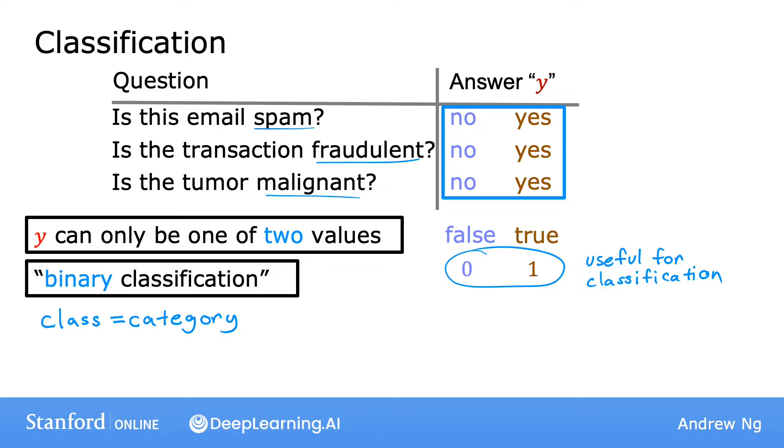One of the terminologies commonly used is to call the false or 0 class the negative class and the true or the 1 class the positive class. For example, for spam classification, an email that is not spam may be referred to as a negative example, because the output to the question of is it spam is no or 0. In contrast, an email that is spam might be referred to as a positive training example, because the answer to is it spam is yes or true or 1. To be clear, negative and positive do not necessarily mean bad versus good or evil versus good. It's just that negative and positive examples are used to convey the concepts of absence or 0 or false versus the presence or true or 1 of something you might be looking for, such as the absence or presence of the spamminess or the spam property of an email, or the absence or presence of fraudulent activity, or absence or presence of malignancy in a tumor.